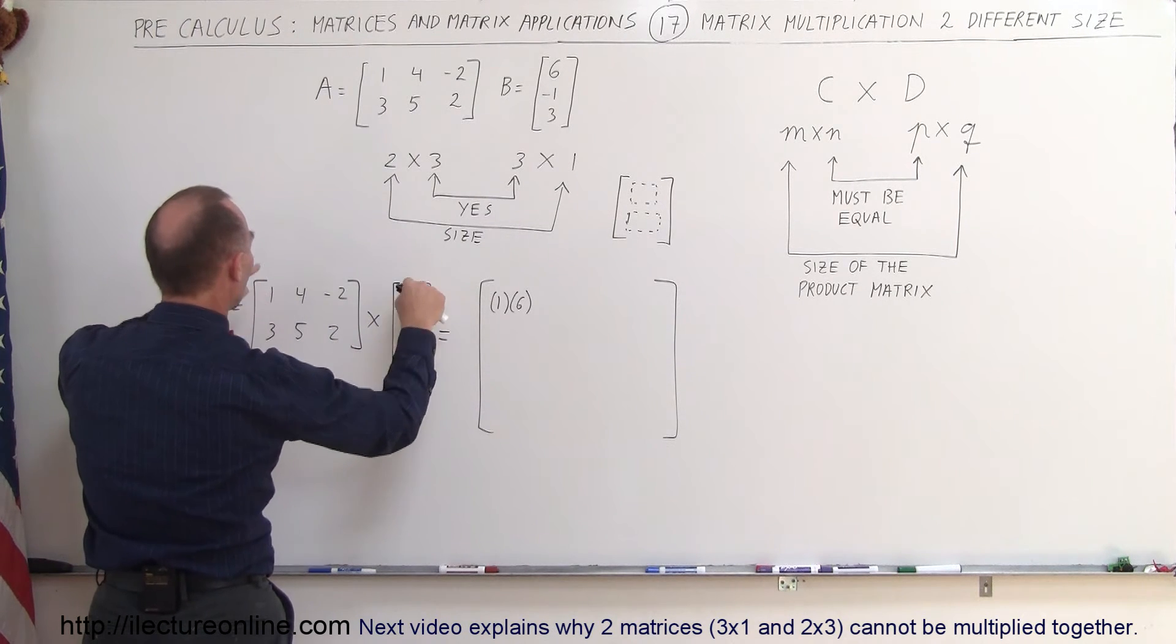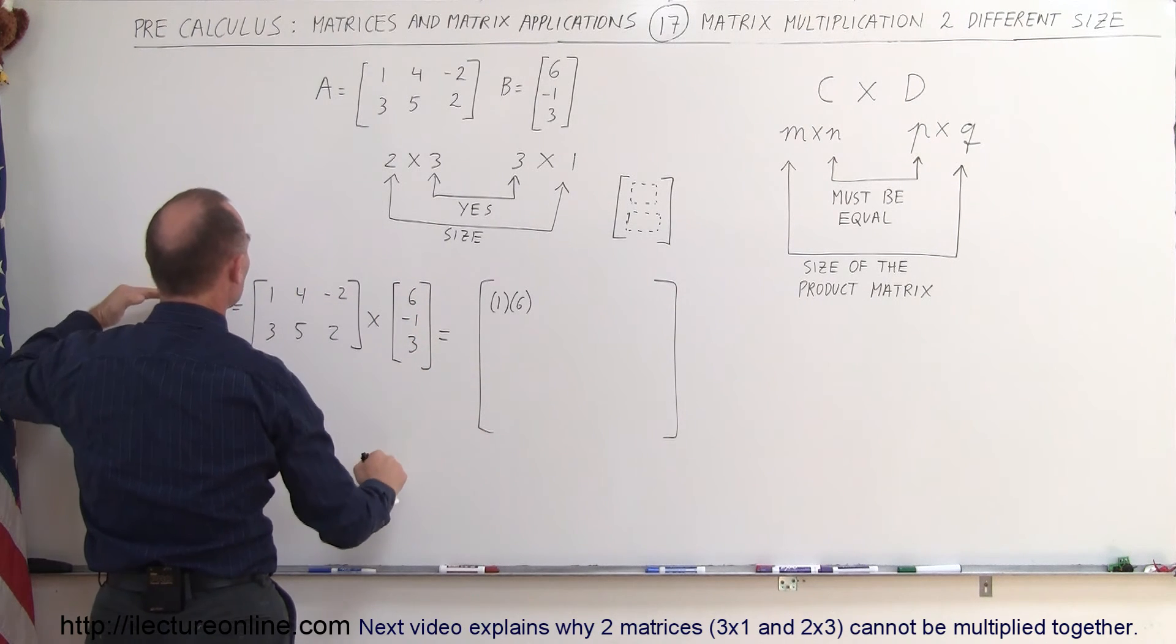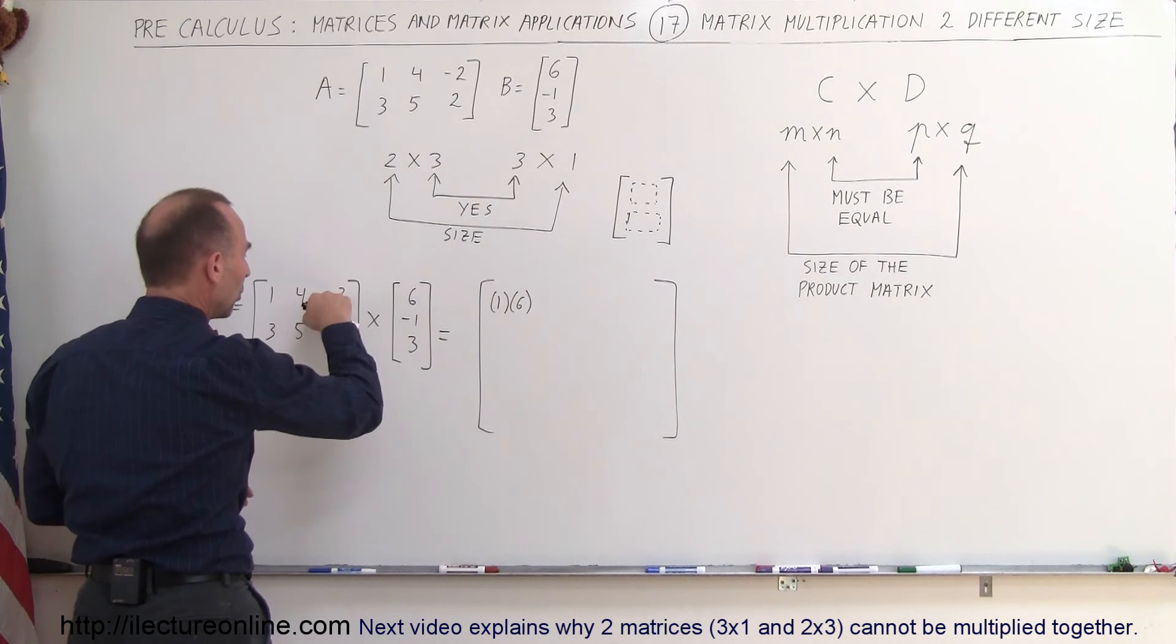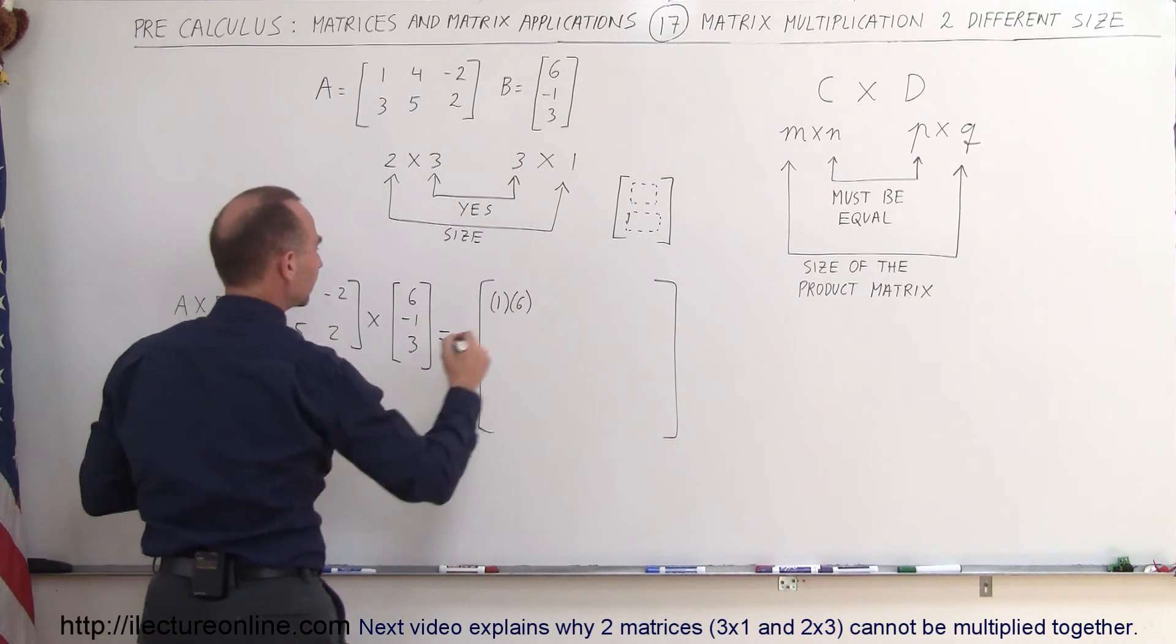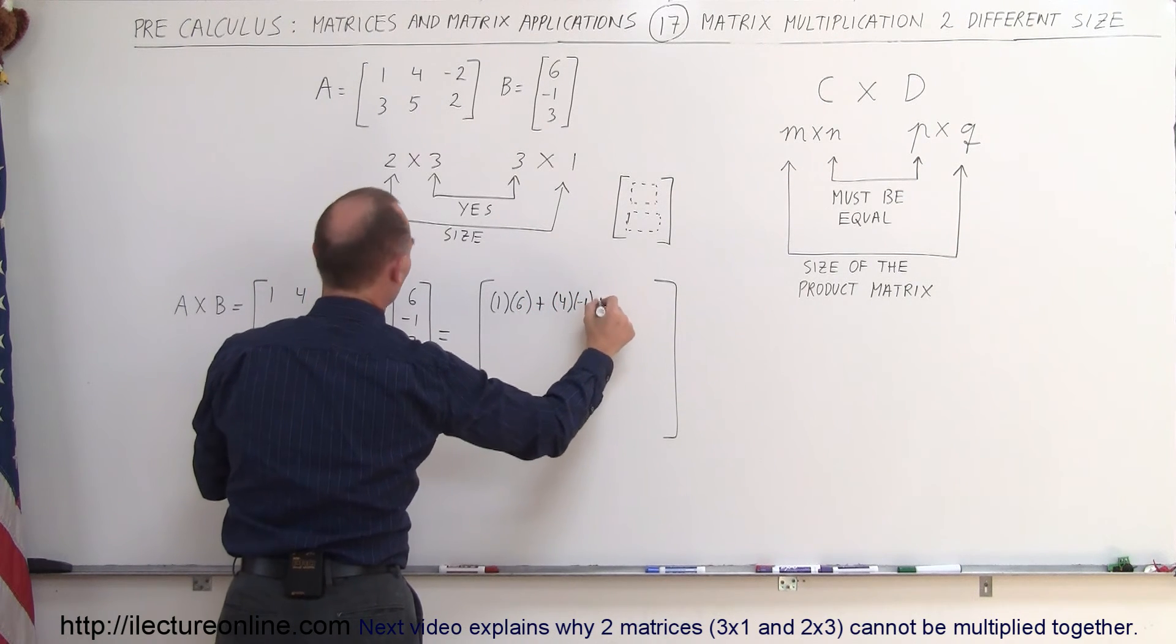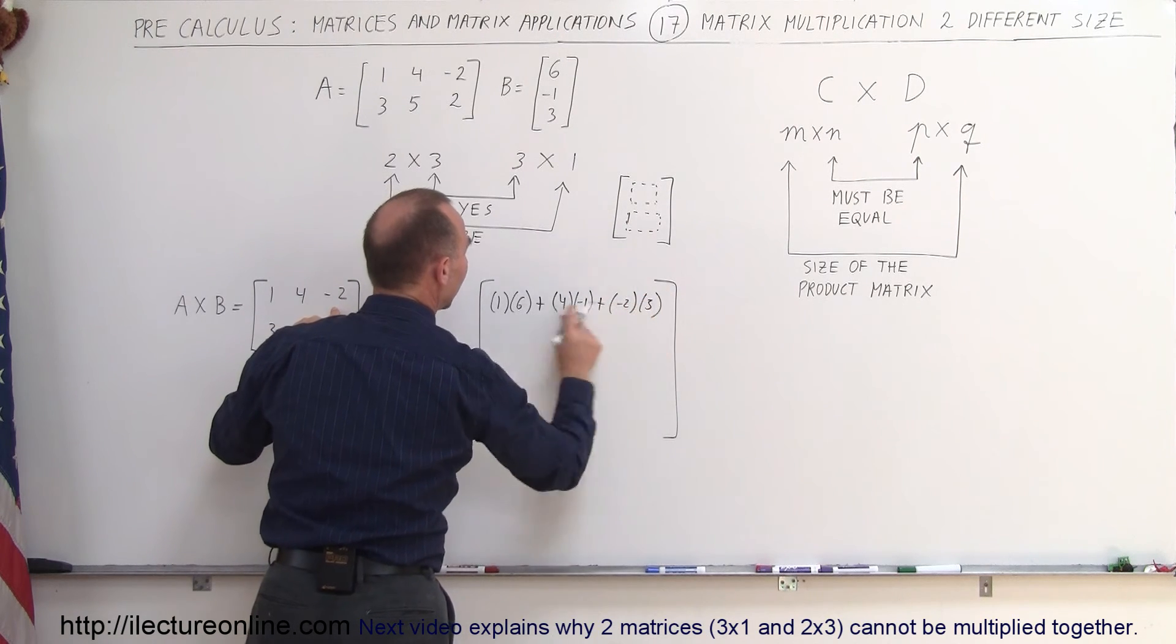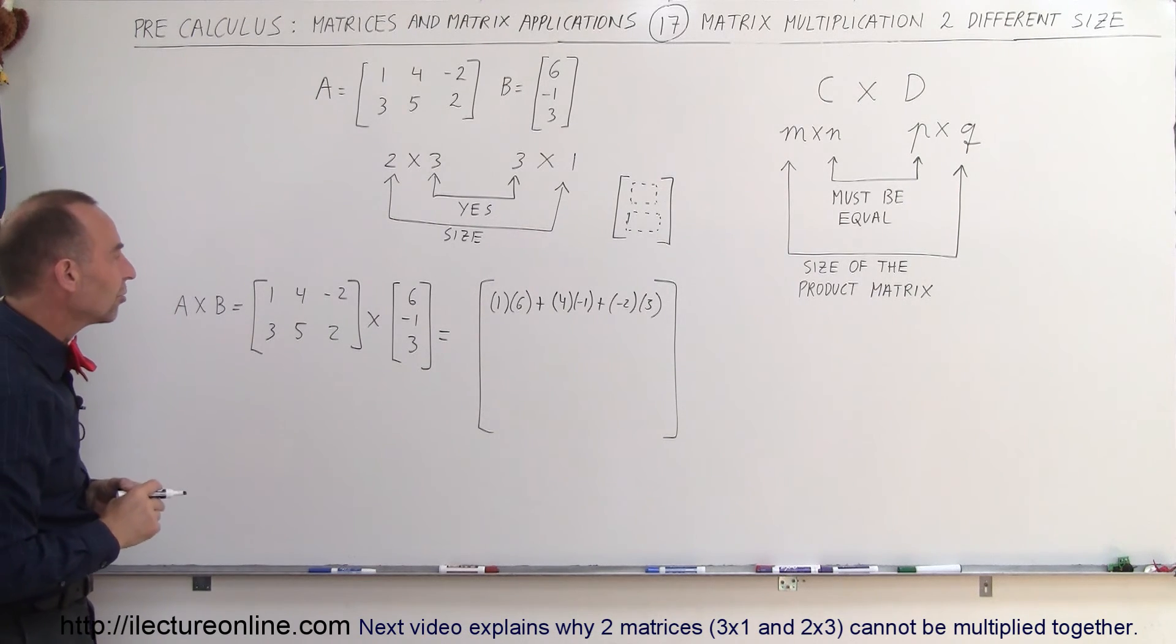You go 1 times 6 plus 4 times negative 1 plus negative 2 times 3. You move to the left with your left hand and down with your right hand along the row and along the column like that. So it's 1 times 6 plus 4 times the negative 1 plus a negative 2 times 3. And that will be the element, the first element or the top element of your resulting matrix.